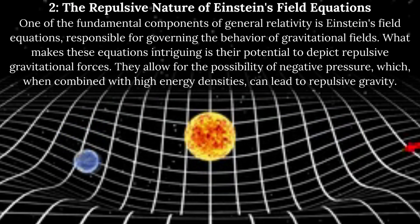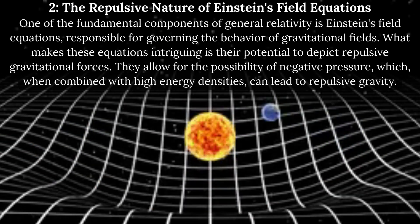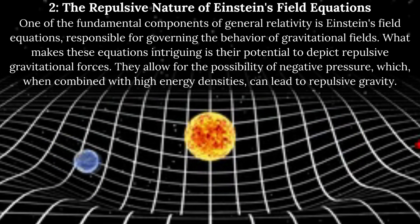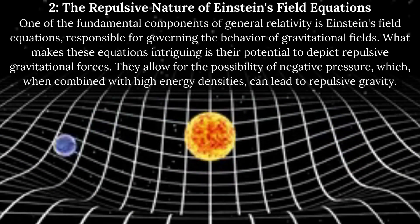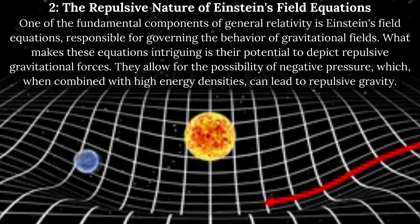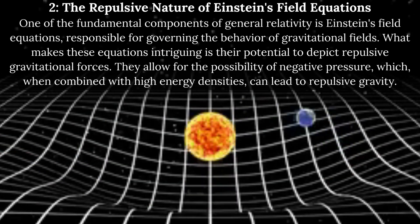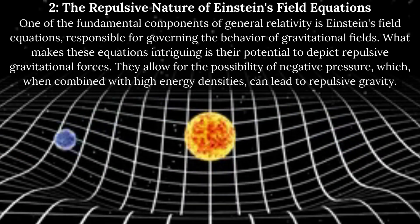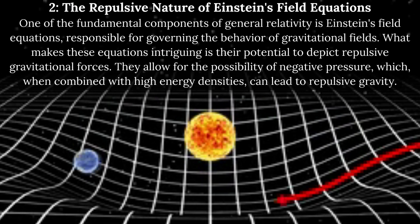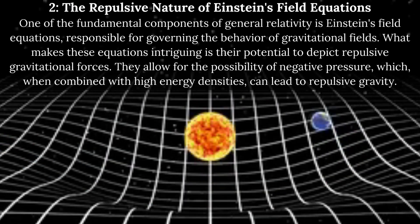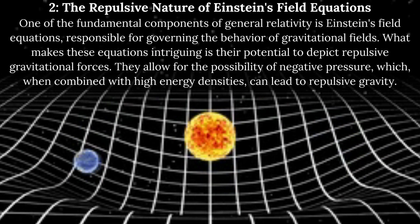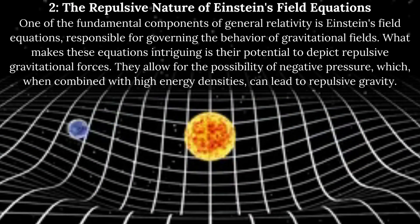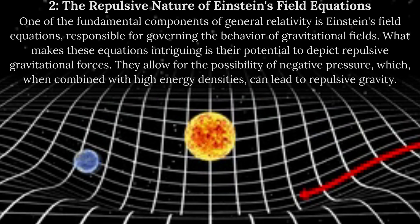The repulsive nature of Einstein's field equations. One of the fundamental components of general relativity is Einstein's field equations, responsible for governing the behavior of gravitational fields. What makes these equations intriguing is their potential to depict repulsive gravitational forces. They allow for the possibility of negative pressure, which, when combined with high energy densities, can lead to repulsive gravity.